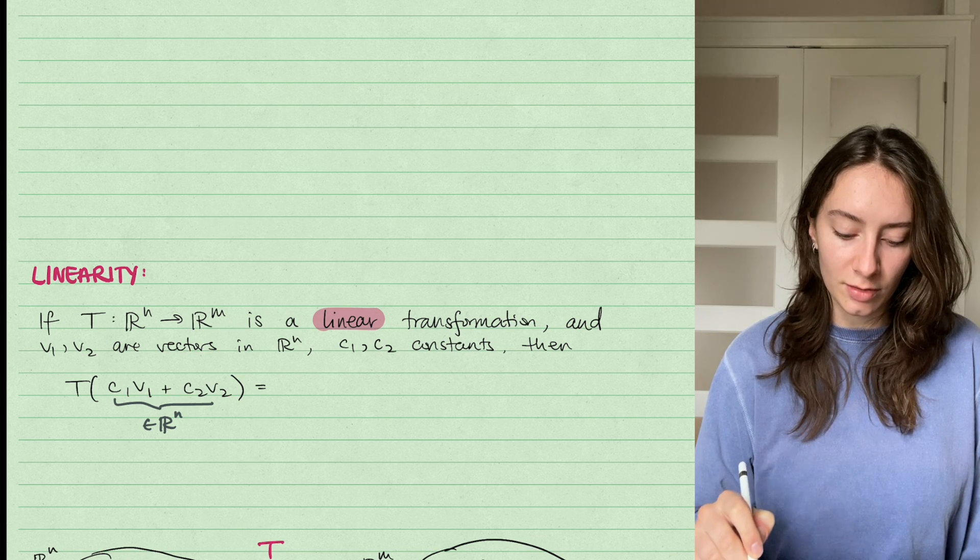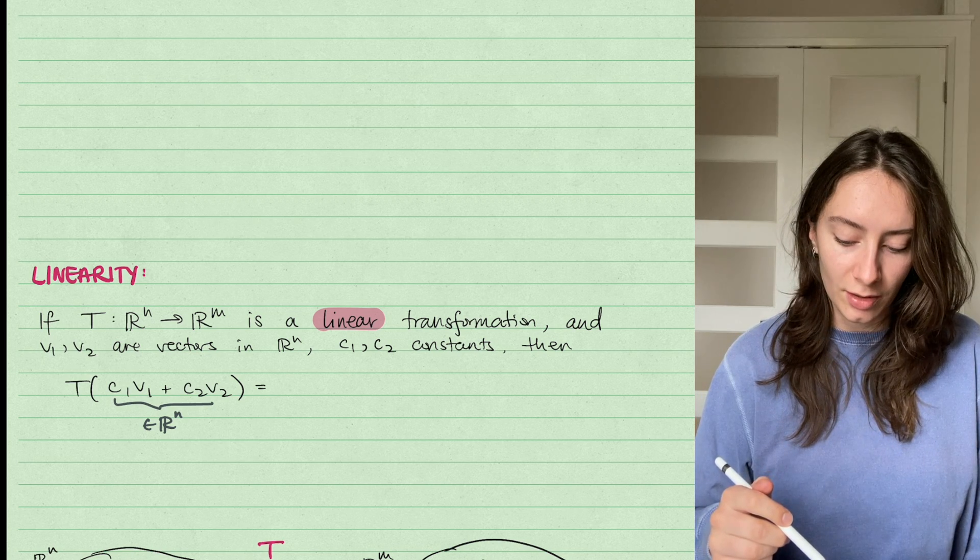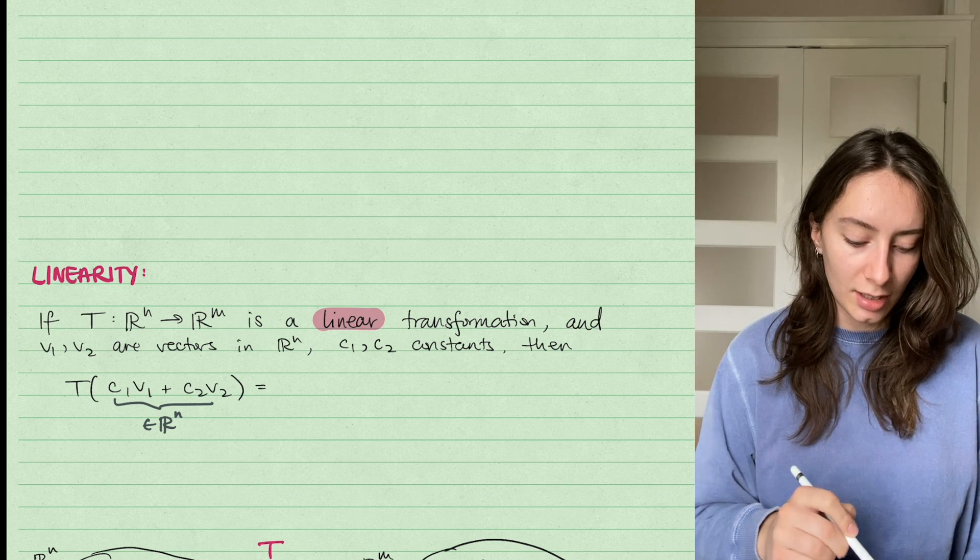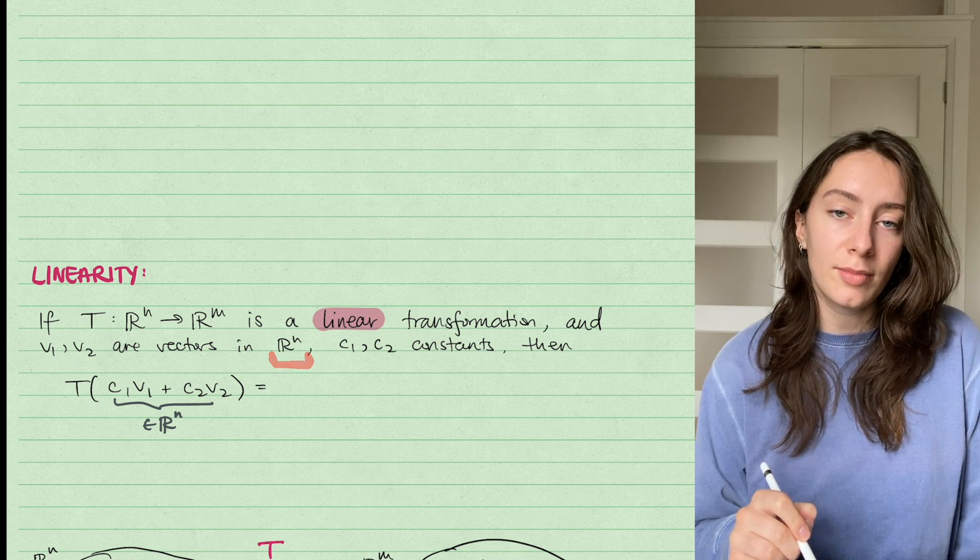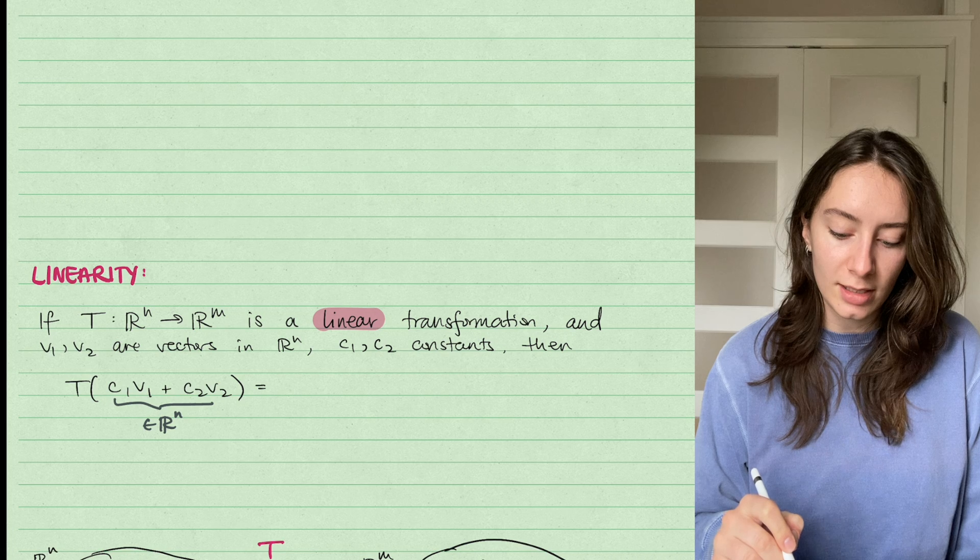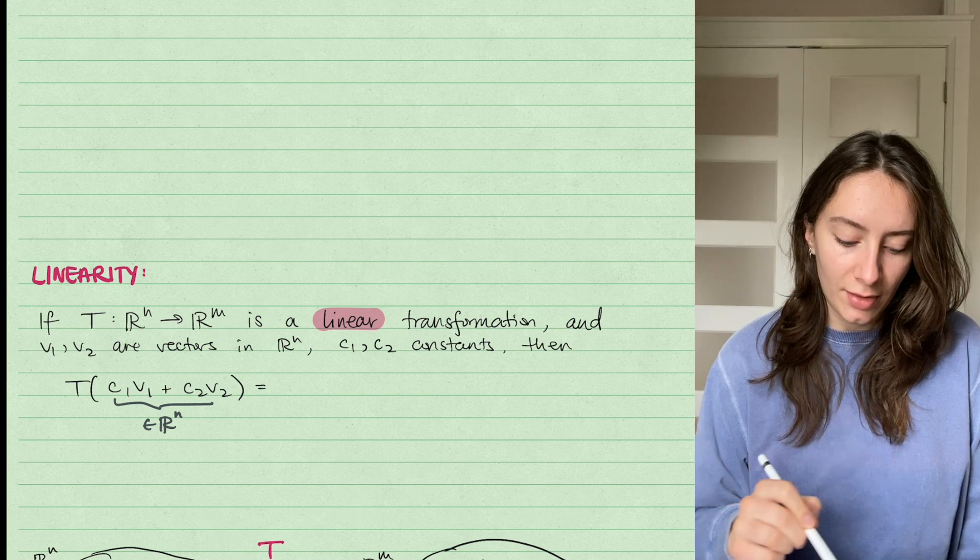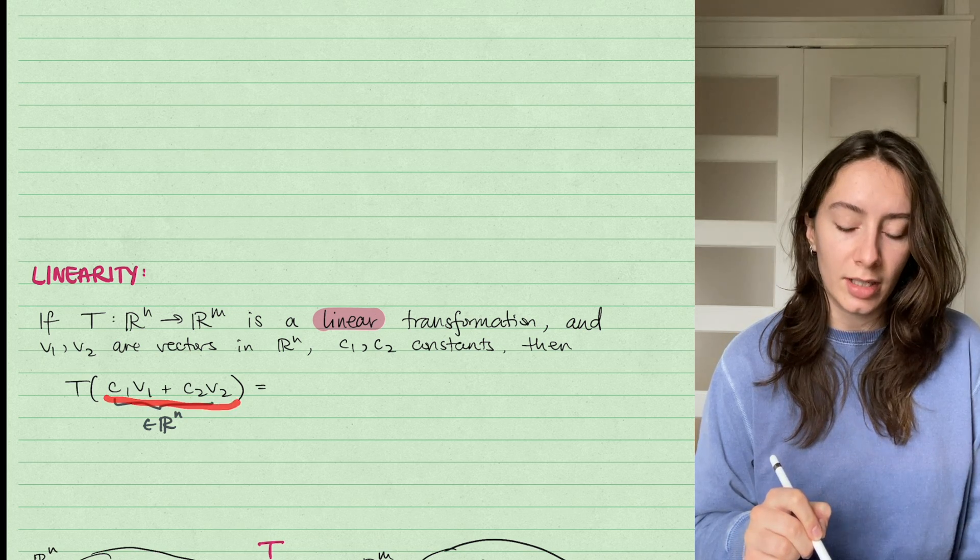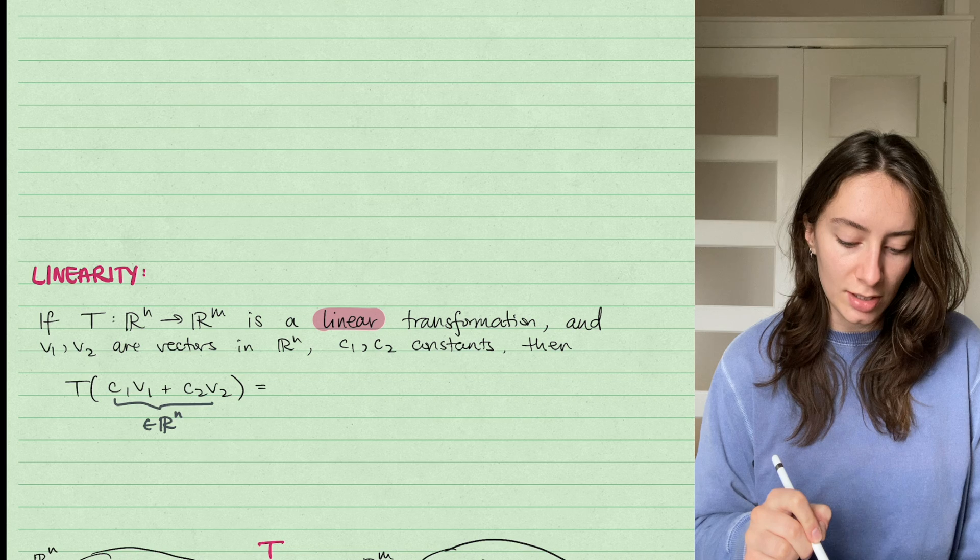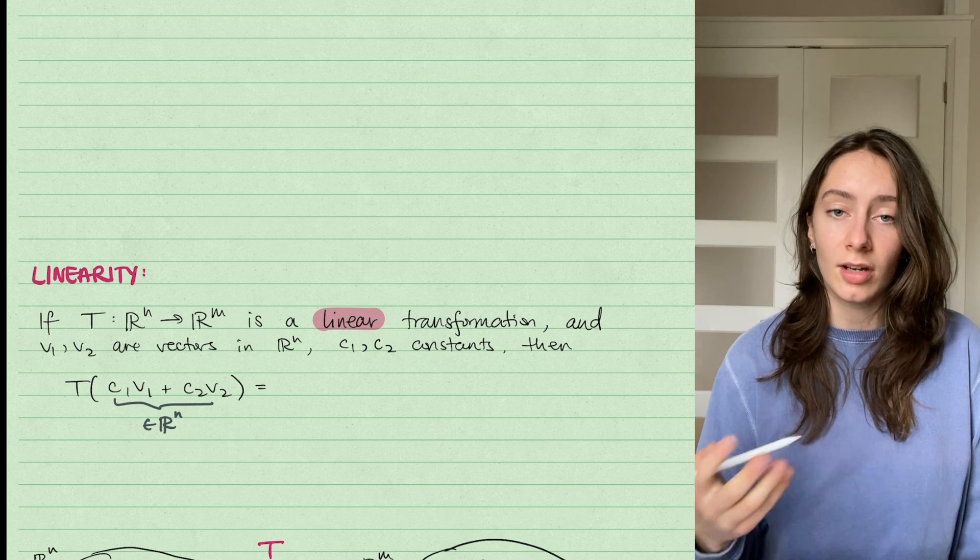That just means if we have some linear transformation, that means if it's linear, it's going to satisfy the following property. So if we have vectors in the input space, in the domain of my linear transformation, and C_1 and C_2 are just real numbers, they're just constants. Then if I take a linear combination C_1V_1 + C_2V_2, this is just some vector in my domain, R^n, in our case R^2022.